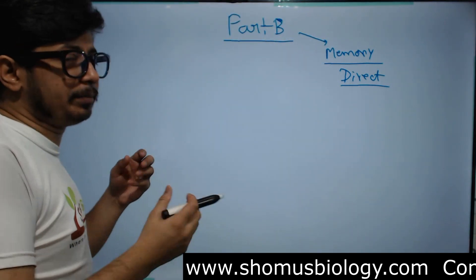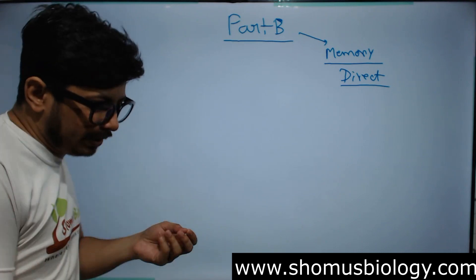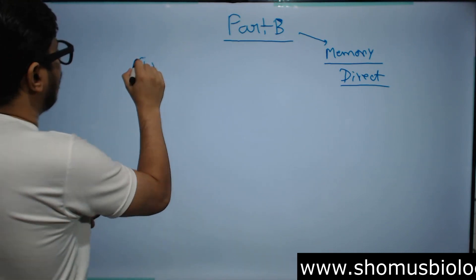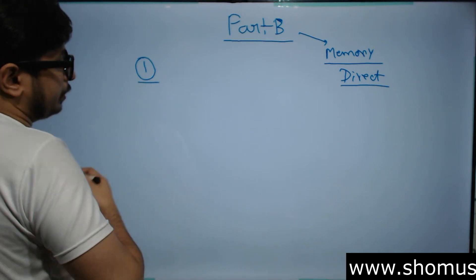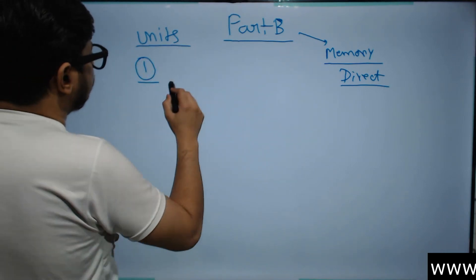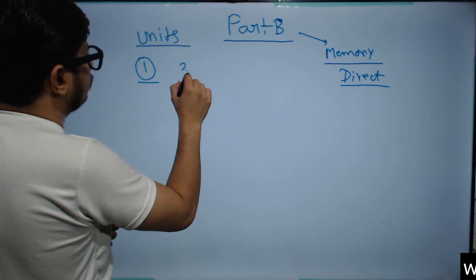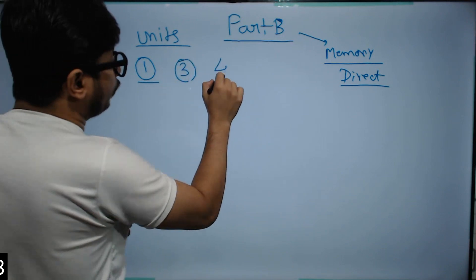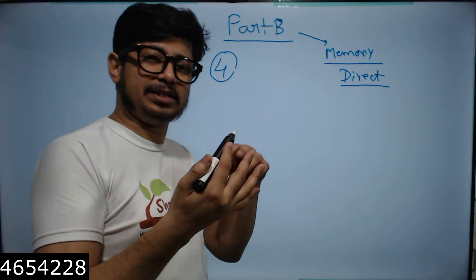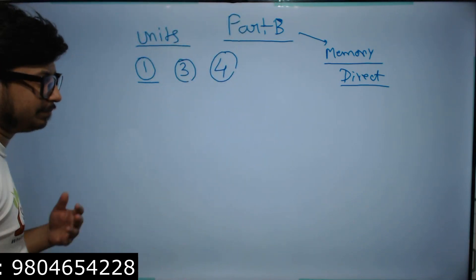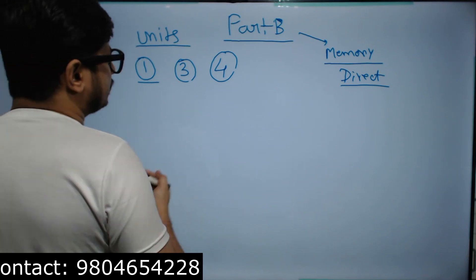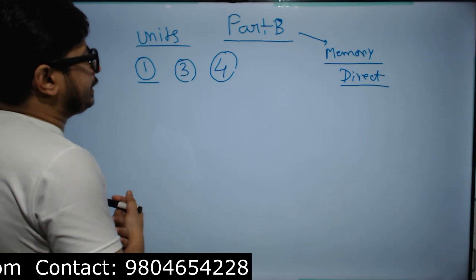There are units important for both Part B and Part C, but some are particularly required for Part B. Unit 1 is biochemistry and chemistry — write it down. Unit 3 is molecular biology. Unit 4 covers cell biology, cancer biology, immunology, and microbiology — specifically the cell signaling part of cell biology. These three units are very important.